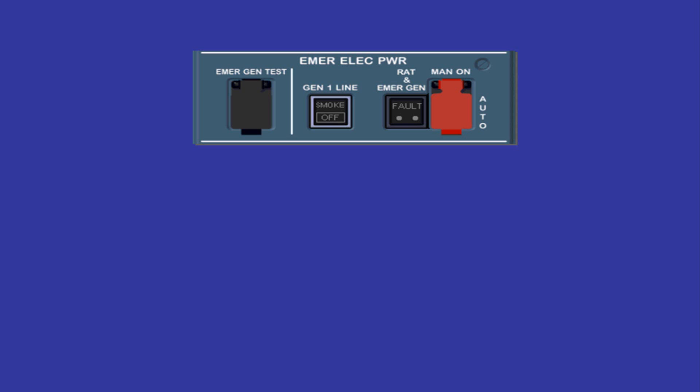The RAT is automatically extended by the system in case of loss of AC 1 and AC 2 buses, in order to pressurise the blue hydraulic system. Then the emergency generator automatically supplies the essential network if its parameters are correct. The RAT may also be extended manually by pressing the red guarded manual on push-button. The RAT plus emergency generator light comes on red when the emergency generator is not yet online — transient configuration of about 3 seconds — or if the generator is faulty.